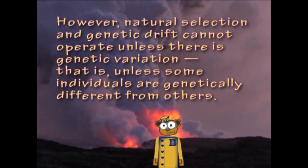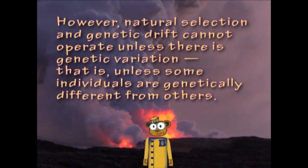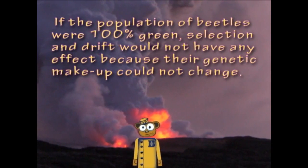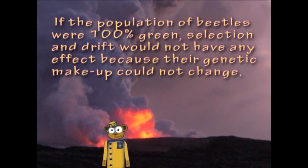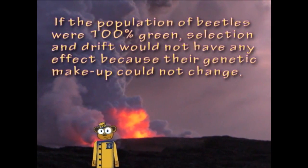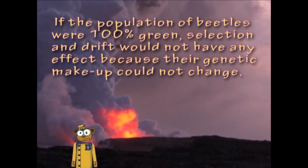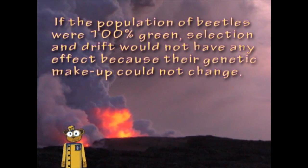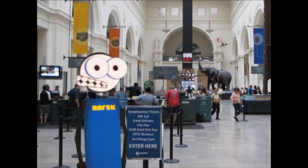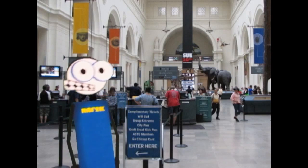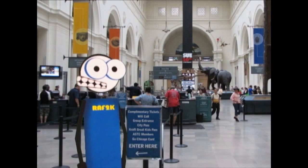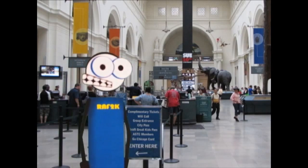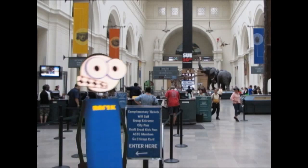If the population of beetles were 100% green, selection and drift would not have any effect because their genetic makeup could not change. This part is true. Are you enjoying the vast fluctuation between true and ridiculous? It's a lot like reading the ingredients on Cheetos or Twinkies — occasionally you see something real among all the alien substances.